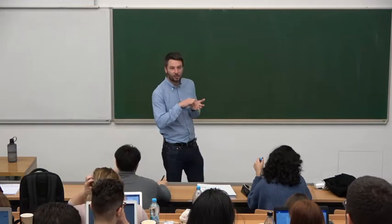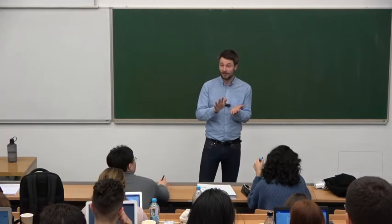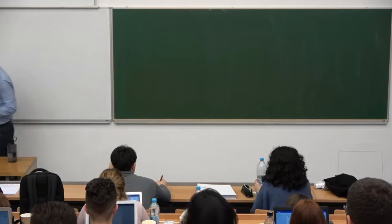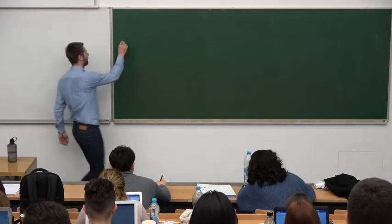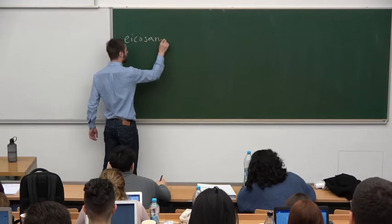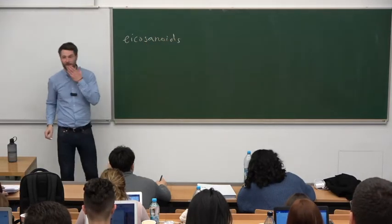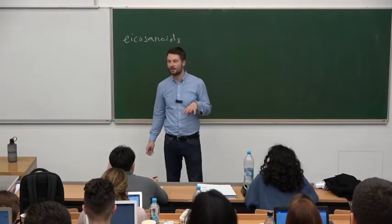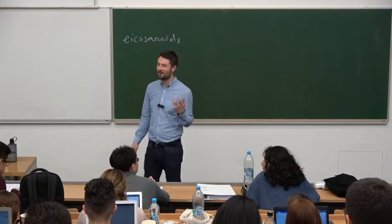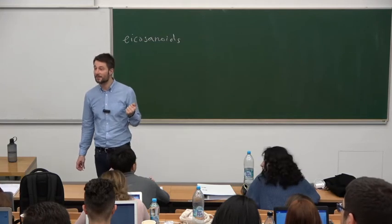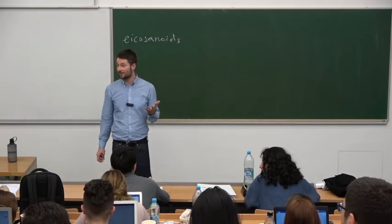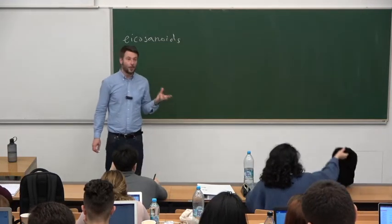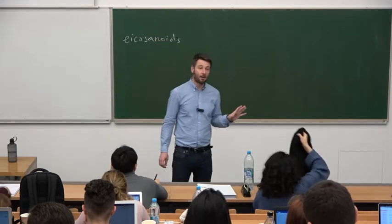Those are called eicosanoids. For any Greek speakers here: the word eicosanoids is derived from the number 20 — 'eicosi' — because they all contain 20 carbons. They are all derived from fatty acids, so they are fatty acid derivatives. When we talked about signaling molecules in the nervous system, almost all of them are derivatives of amino acids. There was one exception — endocannabinoids — which are also fatty acid derivatives in the central nervous system.